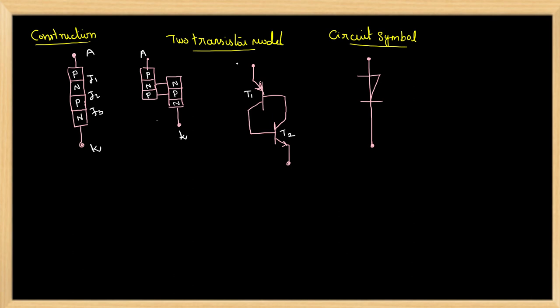This diagram shows the equivalent transistor model of Shockley Diode. Here, the collector of the first transistor is connected to the base of the second transistor and the collector of the second transistor is connected to the base of the first transistor.